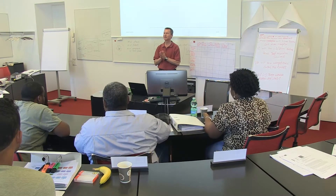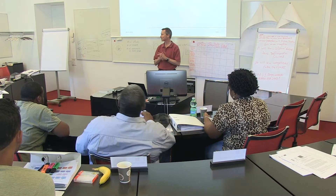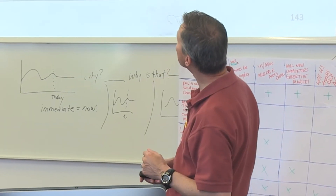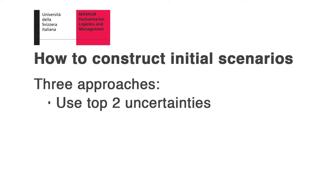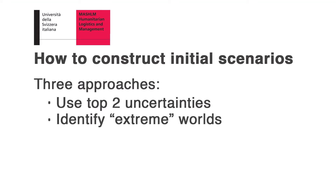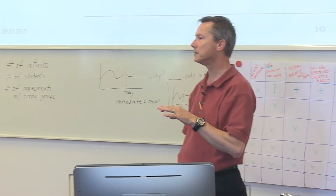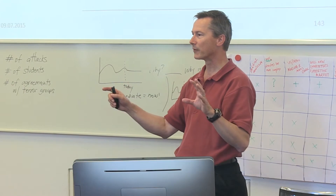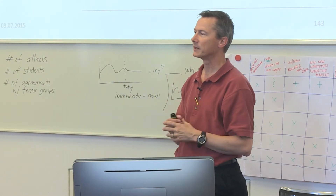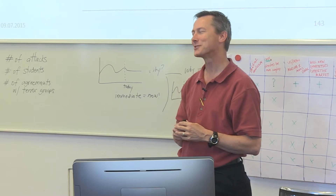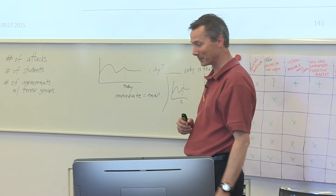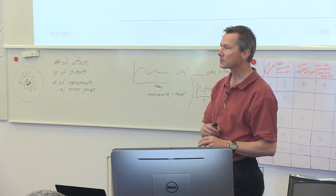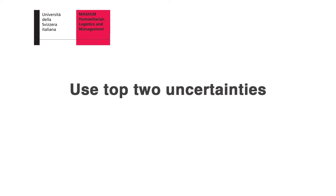We finally start constructing a framework for a scenario. There are several different ways you can do it. You can use the top two uncertainties. You can also do what's called extreme worlds, where you take all the uncertainties that are extreme for good or bad and group them together and construct them that way. People really get excited about doomsday scenarios, so sometimes that is a good way to go. Or you can do clustering. I recommend using what's called the top two uncertainties approach.